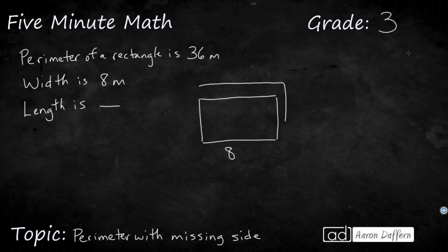And we know that the whole thing, all the way around, that's the perimeter, right? That's 36. So let's do the same thing. If we know that one width is 8, then we can say that the other width is 8.